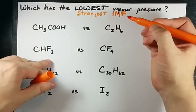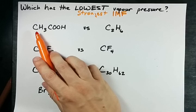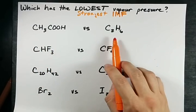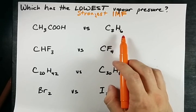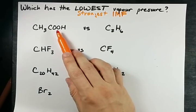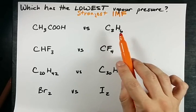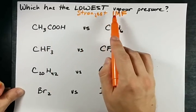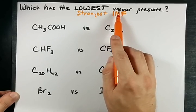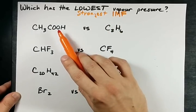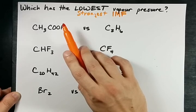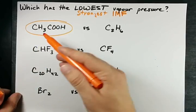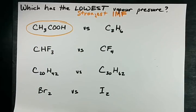Hydrogen bonding will rule the day here. Acetic acid, CH₃COOH, versus C₂H₆. I see an OH here and there's no OH here, which means this has hydrogen bonding, which means it has the stronger intermolecular forces, which means it's tough for molecules to escape from the liquid into the gas phase, which gives it the lower vapor pressure. Pretty easy, right?